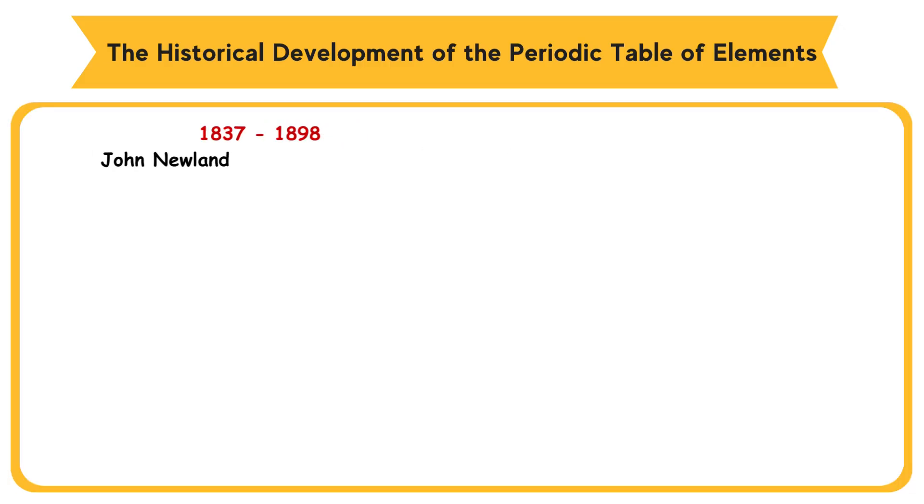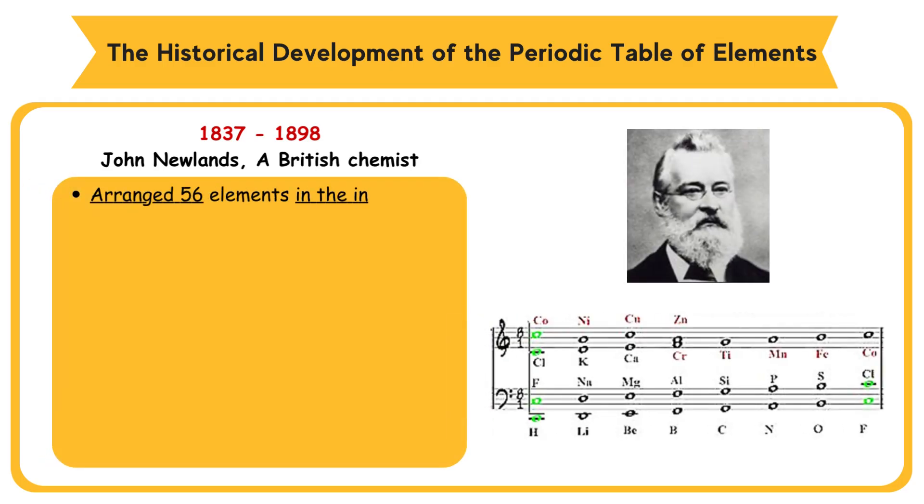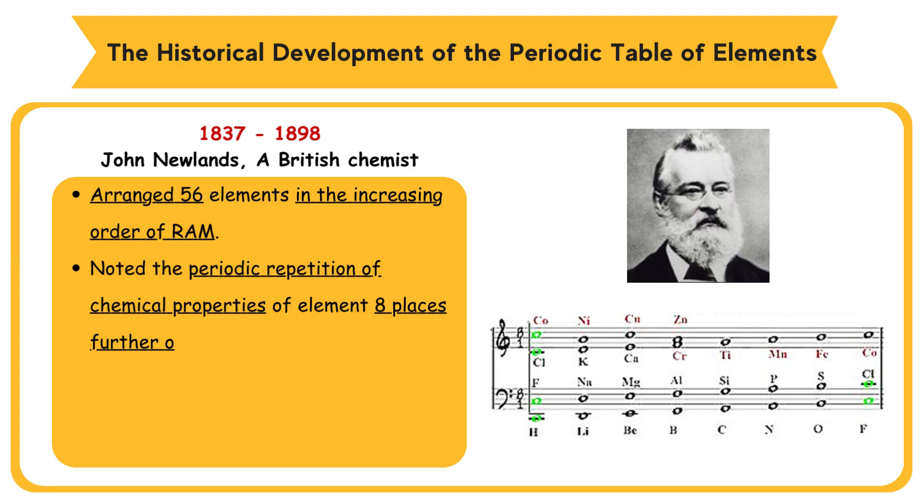1837-1898, John Newlands, a British chemist, arranged 56 elements in the increasing order of relative atomic mass. Noted the periodic repetition of chemical properties of element eight places further on. He named this phenomenon as law of octave, as this is similar to the octaves of music. Octaves Newlands Law, 1865.